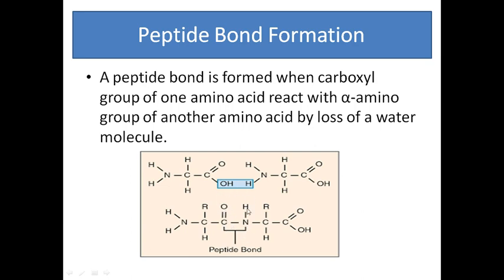The C double bond O-H here is said to be the peptide bond. A peptide bond is formed when the carboxyl group of one amino acid reacts with the amino group of another amino acid by losing a water molecule. To join two amino acids, always write the NH2 terminal end of the amino acid on the left hand side.